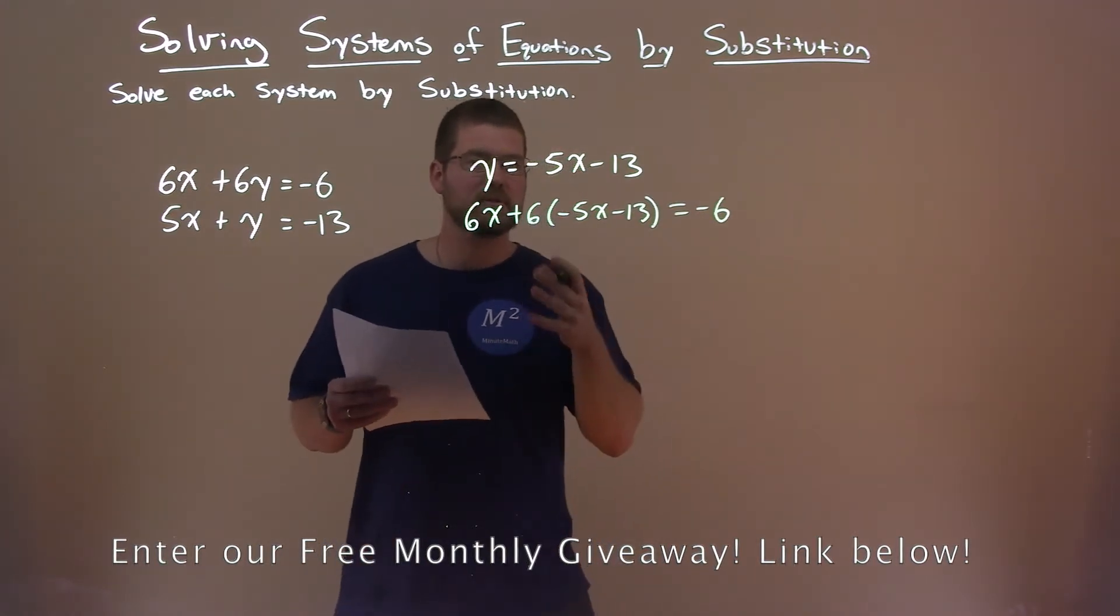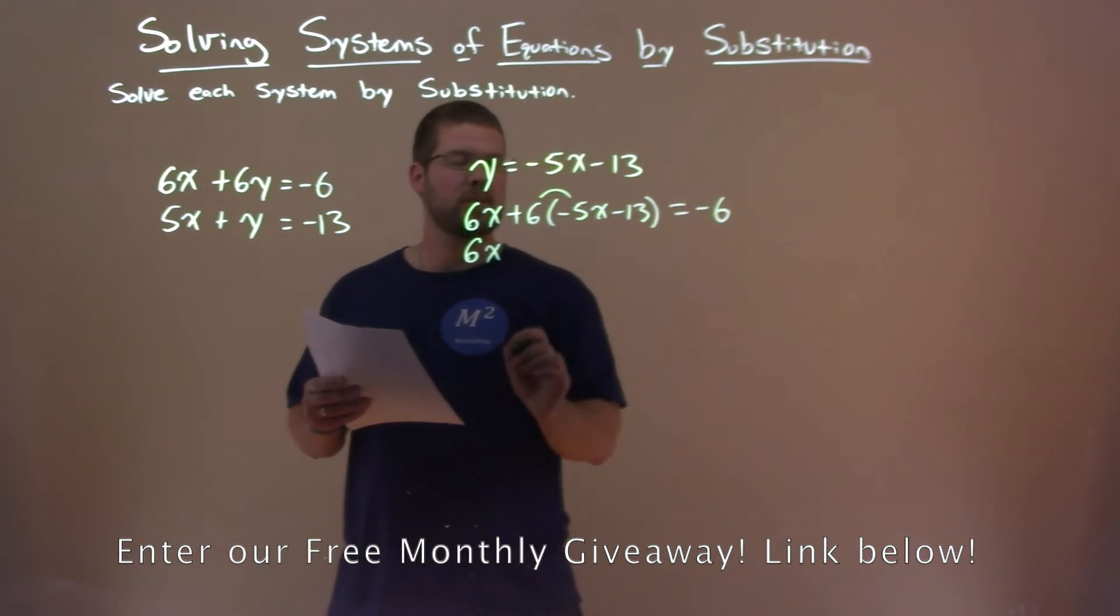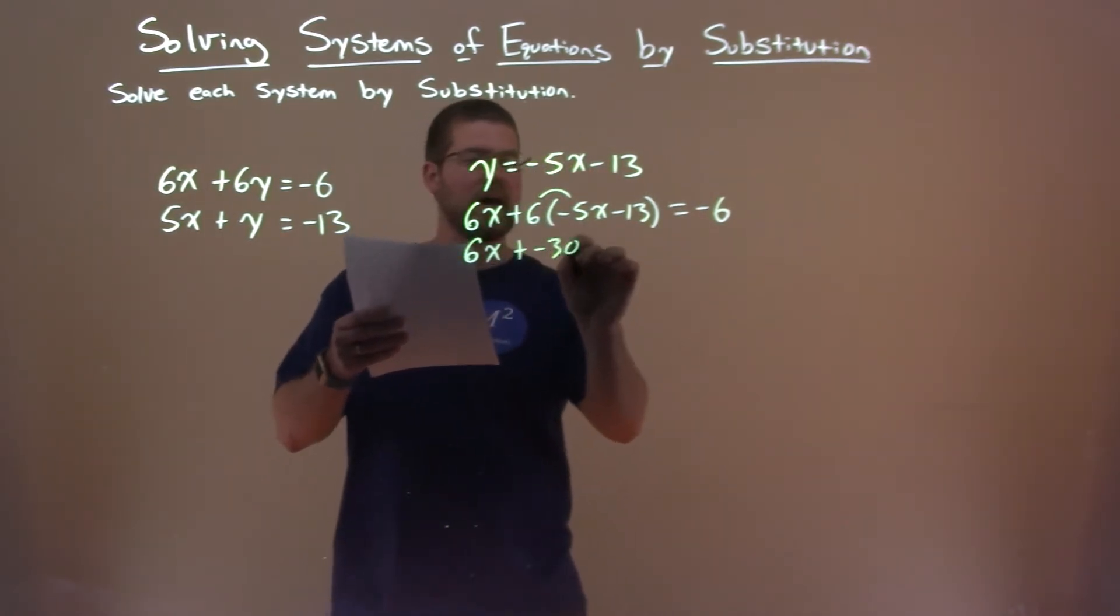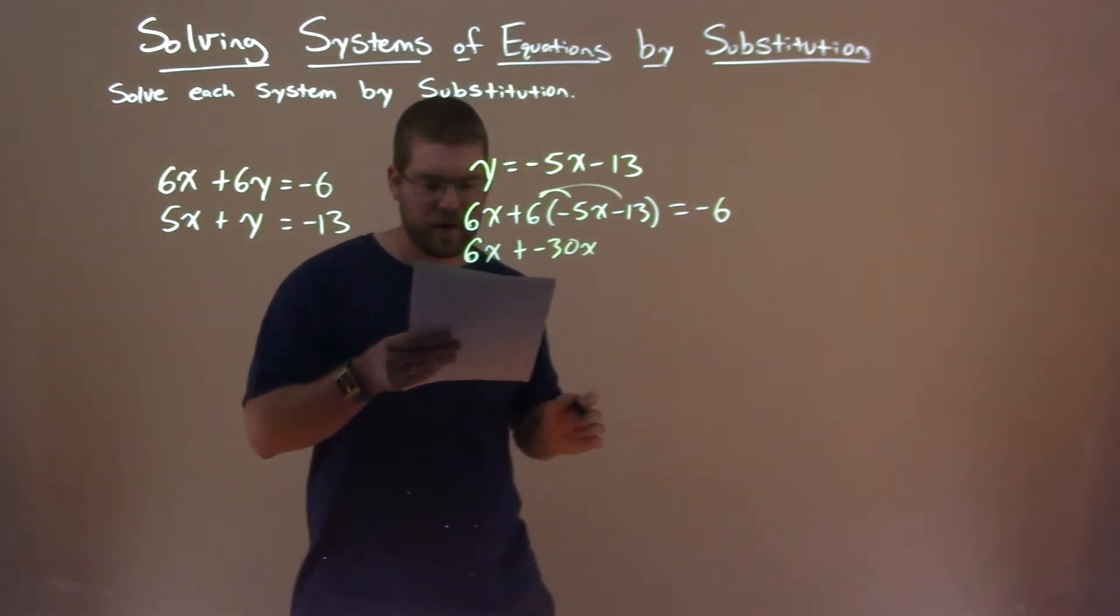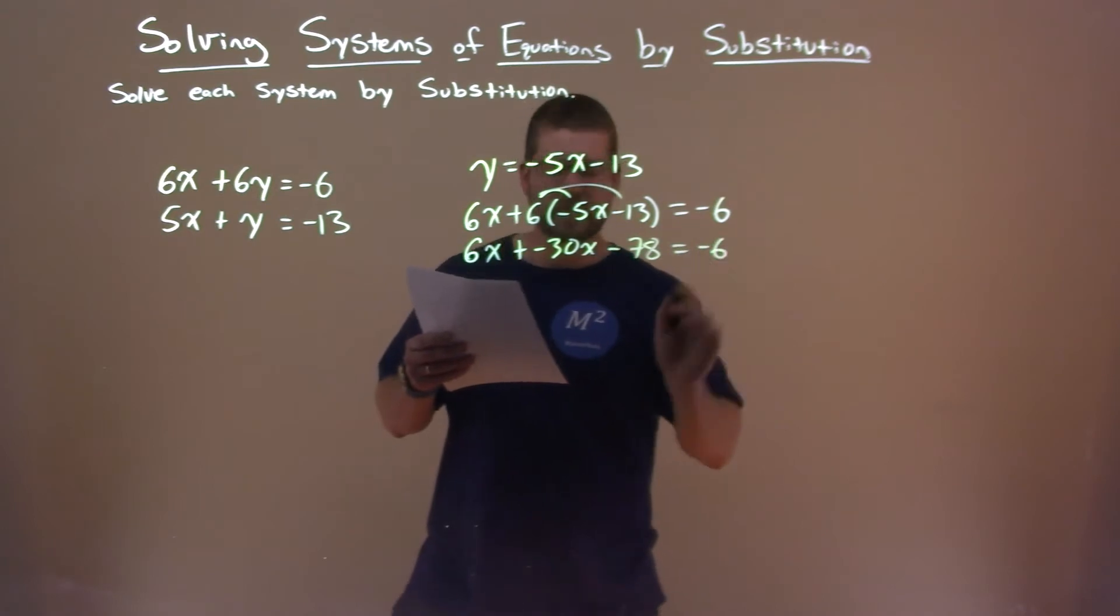So now we want to solve for x. 6x comes down. Distribute the 6 over. 6 times negative 5x is minus 30x. 6 times minus 13 is minus 78, and that equals minus 6.